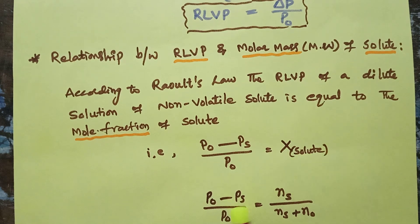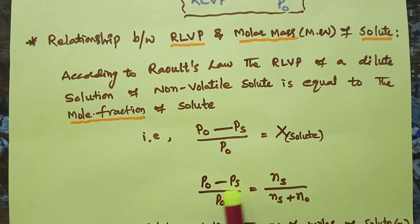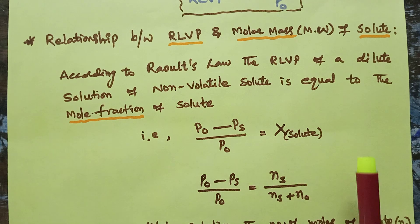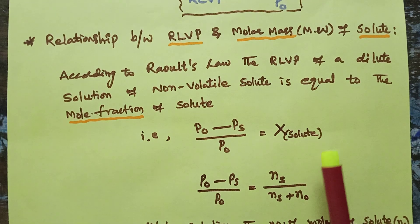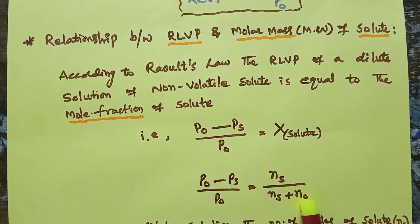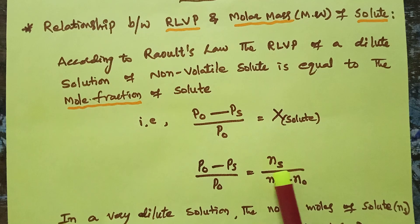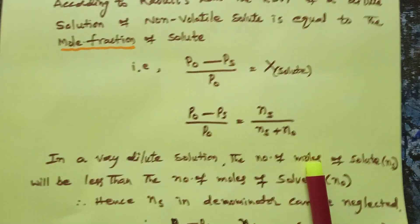The mole fraction is defined as the number of moles of one component divided by the total number of moles of all components. So: x = ns / (ns + n⁰), where ns is moles of solute and n⁰ is moles of solvent.